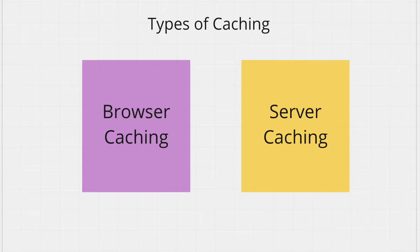There are two places you can have caches: the user's browser and your backend server. The two caches are used for different purposes and they have their own pros and cons.